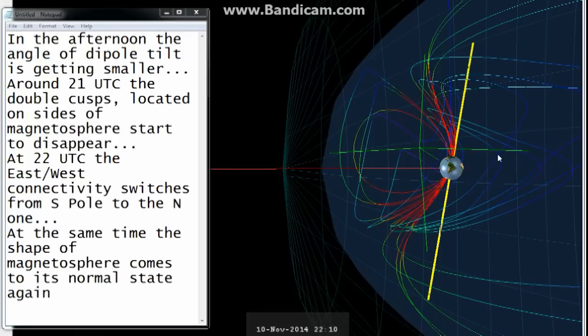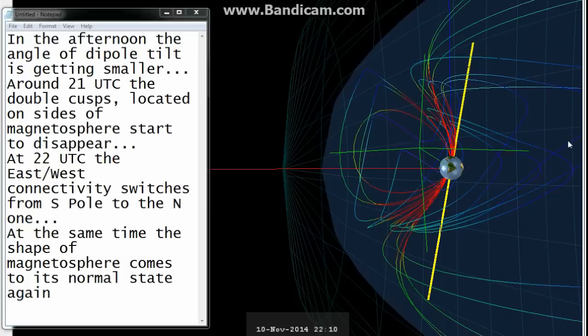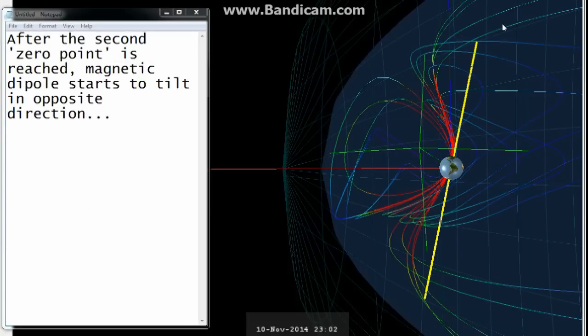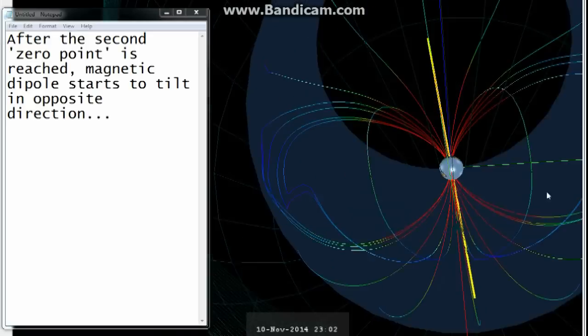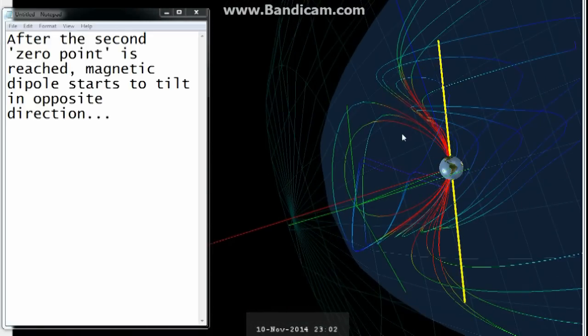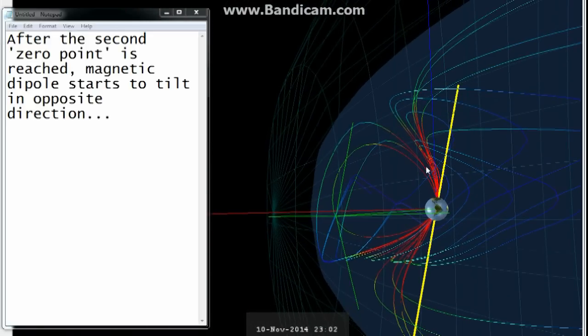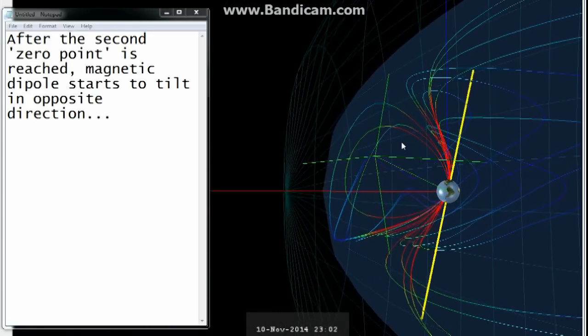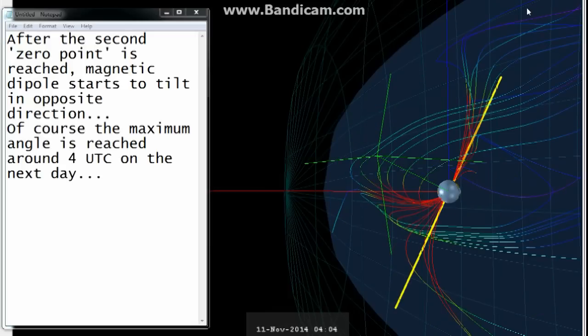At the same time, the shape of the magnetosphere comes to its normal state again. After the second zero point is reached, the magnetic dipole starts to tilt in the opposite direction. Of course, the maximum angle is reached around 4 UTC on the next day.